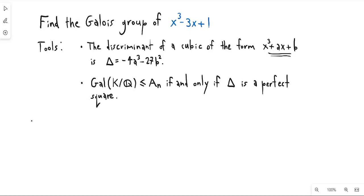Let's get started. We first want to show that this polynomial is irreducible over the rational numbers. So we want to show that x³ - 3x + 1 is irreducible.